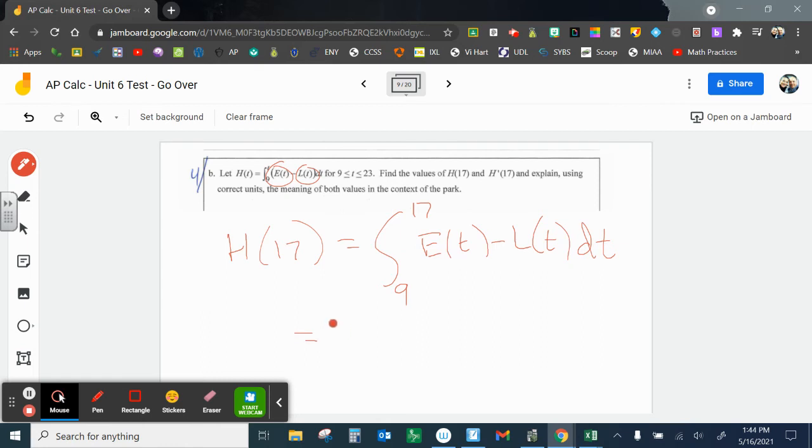And now 17 hours after midnight is 5 p.m. So when I get this, I'm going to know H(17), I'm going to put this into my calculator. A little more complicated, and I should get 3,725 people in the park. It's not the total people that went into the park because it also is accounting for people that are leaving. And this is just at 5 p.m. Okay, so please make sure you can put that into your calculator and get that.